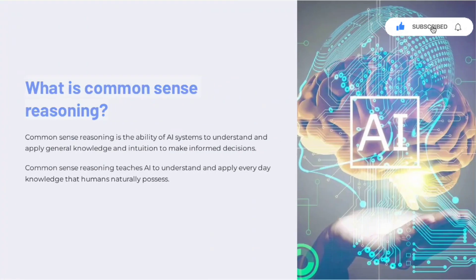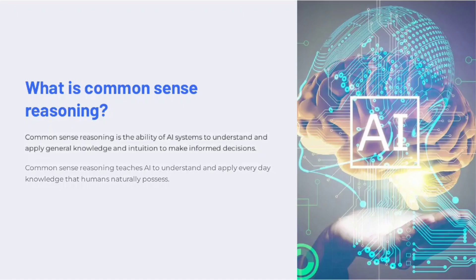What is Common Sense Reasoning? Common Sense Reasoning is the ability of AI systems to understand and apply general knowledge and intuition to make informed decisions. It teaches AI to understand and apply everyday knowledge that humans naturally possess.